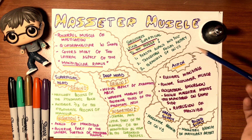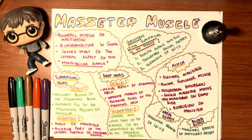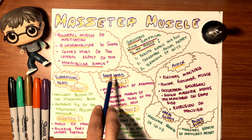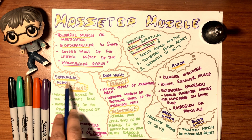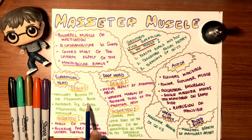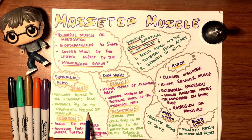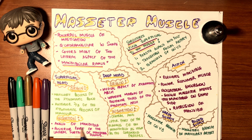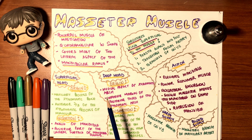The masseter has two heads: superficial and deep. The superficial head originates from the anterior two-thirds of the zygomatic process and inserts into the angle of the mandible and the posterior part of the lateral surface of the mandibular ramus.